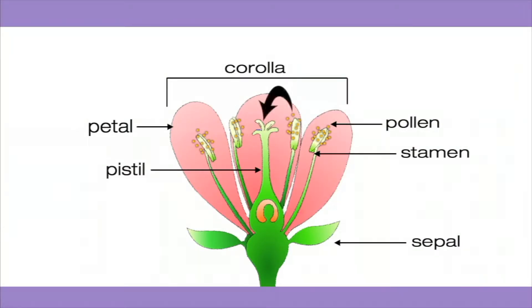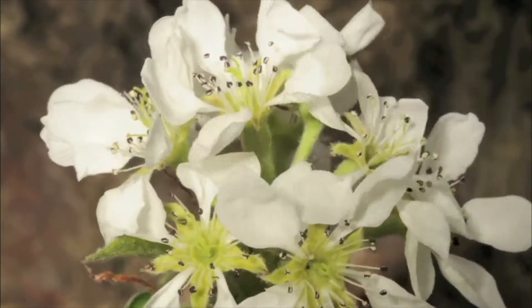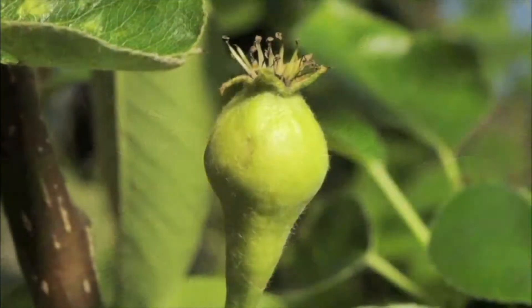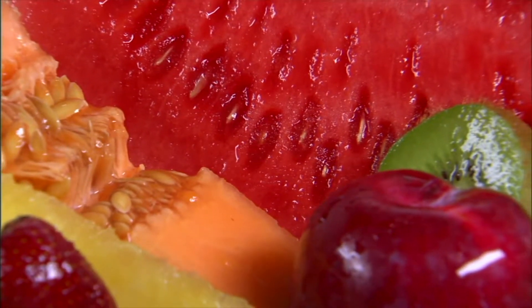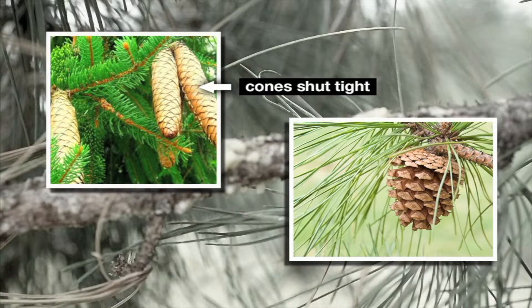Once the pollen grains stick to the pistil, a pollen tube begins to form. The pollen tube extends down to the ovary — the lower, most part of the pistil. In the ovary, we find the ovules, which develop into seeds. After fertilization, the petals of the flower dry out and fall off — they're not needed anymore. Then the ovary transforms into a fruit, which surrounds and protects the seeds. Did you know that some plants don't have flowers at all? They form seeds inside cones. Pine trees and fir trees are two kinds of plants that have cones instead of flowers. At first, cones are shut tight until the seeds have developed; then the cones open, allowing the seeds to fall to the ground so they can begin to grow.